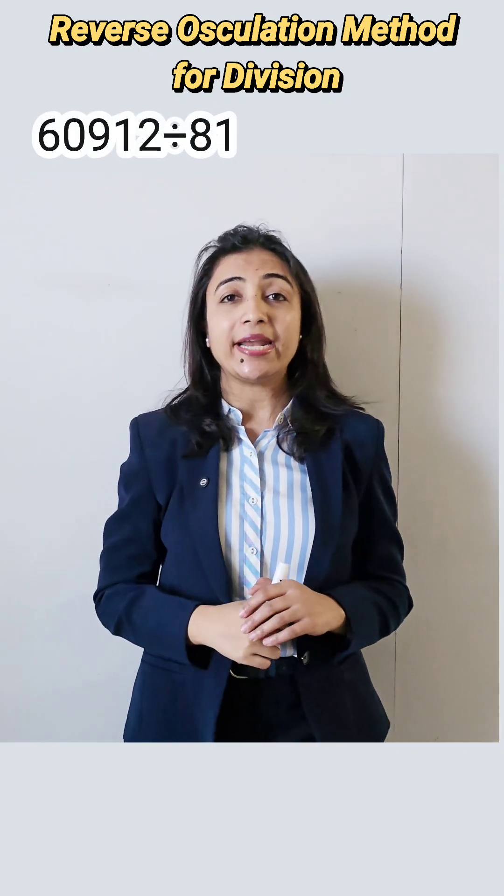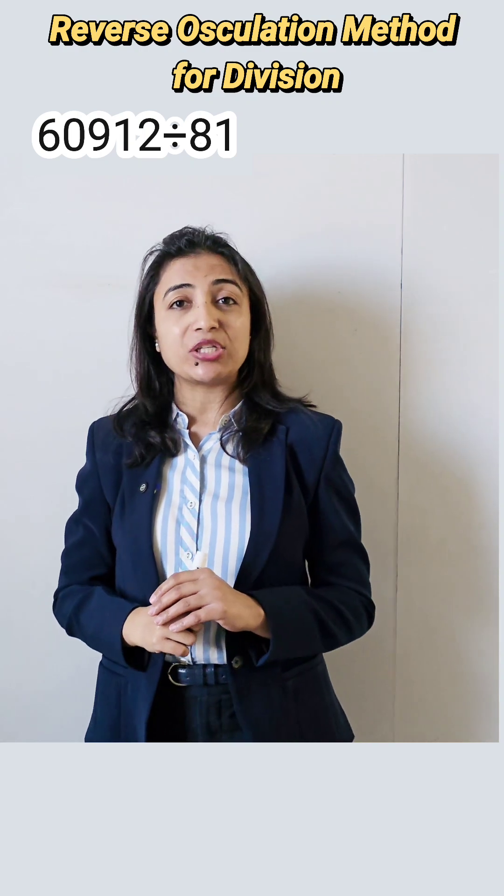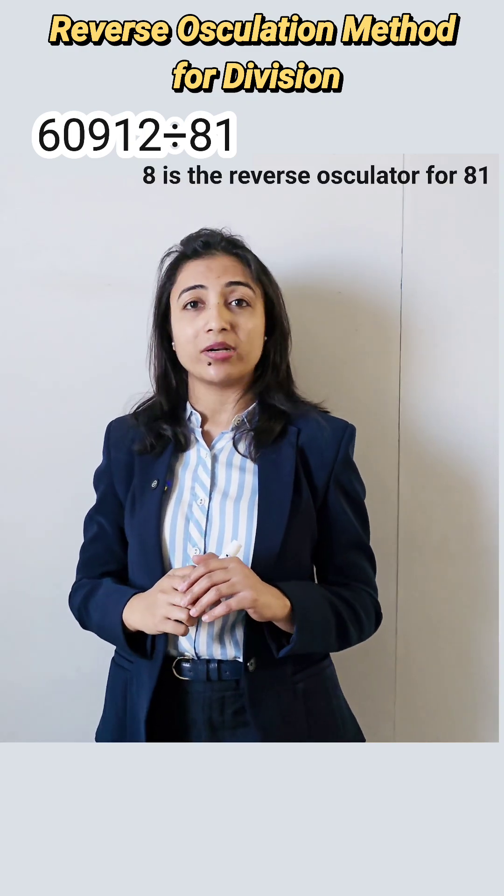Here is the number. We have to divide this number by 81. As we are dividing by 81, so 8 is the reverse oscillator number for 81.